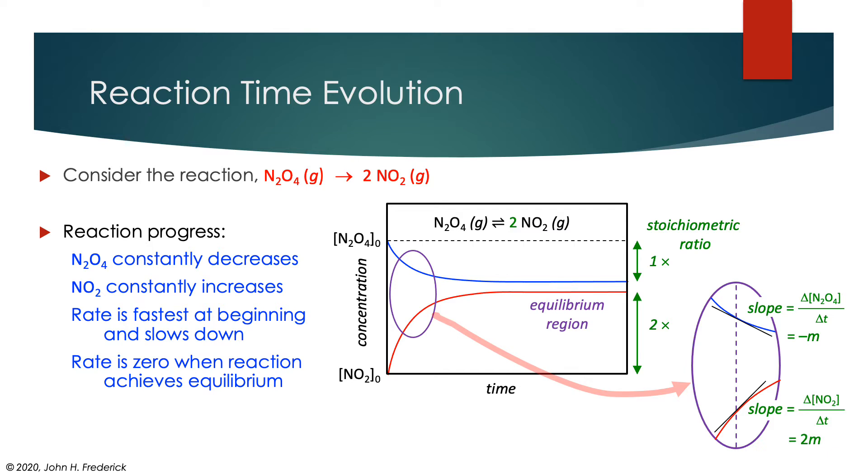Now you'll notice that as I drew this out, the slope for the top one is minus M. It's a negative slope because it's decreasing, and the bottom slope I've drawn is positive 2M because it's increasing. But it's important that those two are related to one another, and they're related by the stoichiometric ratio. So N2O4 is going away, but each time one of its molecules is destroyed, two of the NO2 molecules are created, so the NO2 molecules are growing in twice as fast.